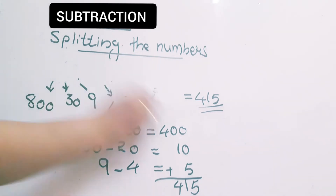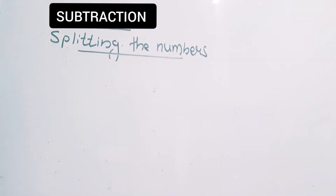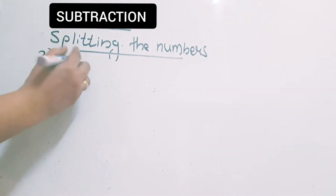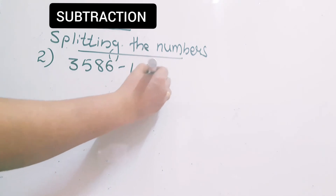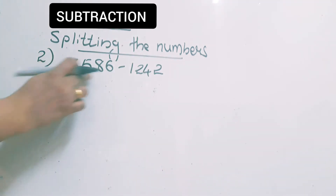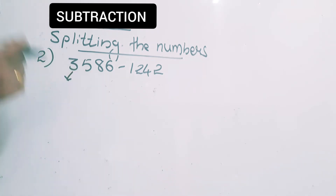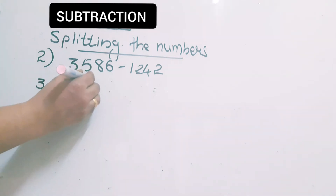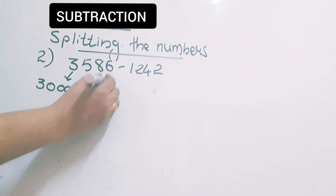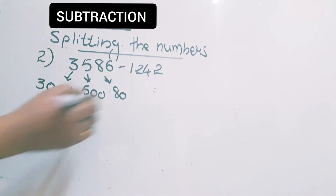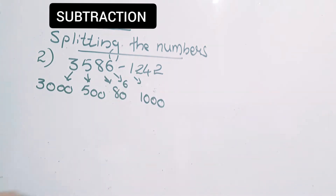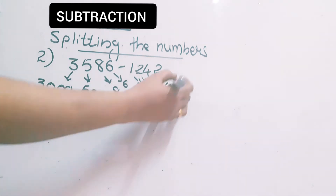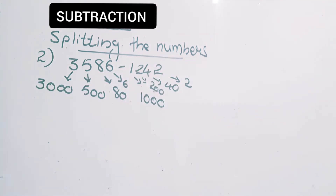Now let's see a 4-digit number — example 2: 3,586 minus 1,242. First step is to split the numbers according to place value. 3 is at the thousands place, place value is 3000. 5 is at the hundreds place, place value is 500. 8 is at the tens place, place value is 80. 6 is at the ones place, place value is 6. Similarly: 1's place value is 1000, 2's place value is 200, 4's place value is 40, and this 2's place value is 2 only. Splitting is done.